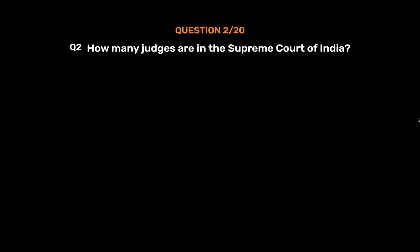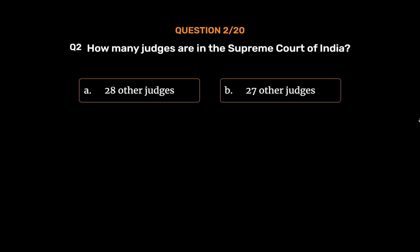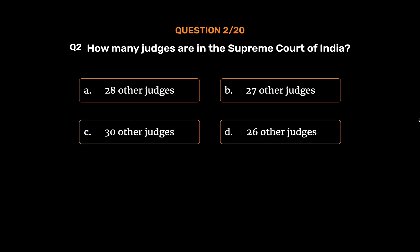Question No. 2. How many judges are in the Supreme Court of India? Option A: 28 Other Judges. Option B: 27 Other Judges. Option C: 30 Other Judges. Option D: 26 Other Judges. The correct answer is Option C: 30 Other Judges.